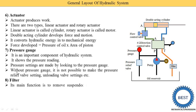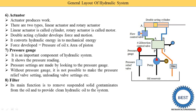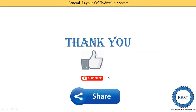The last component is the filter. Its main function is to remove suspended solid contaminants from the oil and provide clean hydraulic oil to the system. In some books, the filter is provided in the return pipe; in others, it is placed in the supply pipe of the pump. Both locations are correct — you don't need to be confused about it. Thank you for watching this video. If you liked the video, subscribe to the channel, comment, and don't forget to share with your friends.